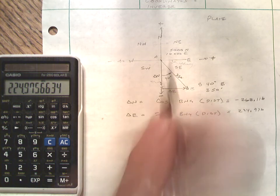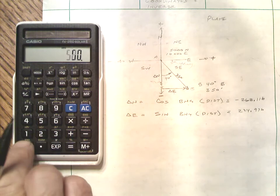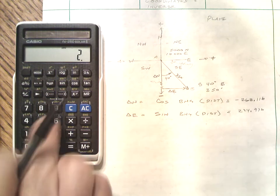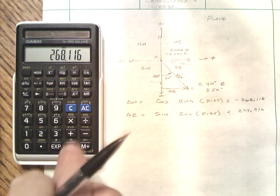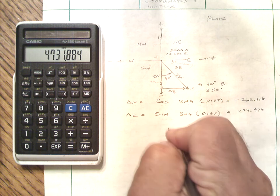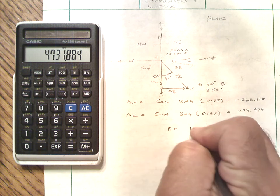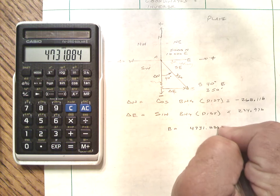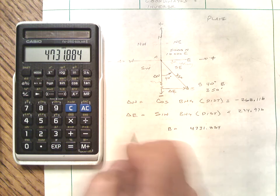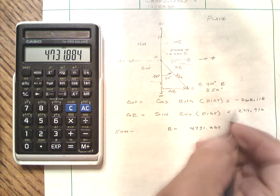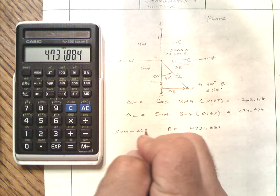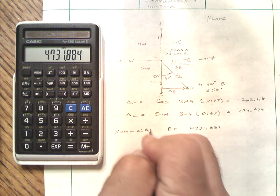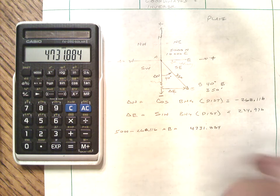So now if we're starting at 5,000 in the north and we are going down 268.116, B's coordinate then is 4731.884. So I took 5,000 and subtracted 268.116 to come up with B.